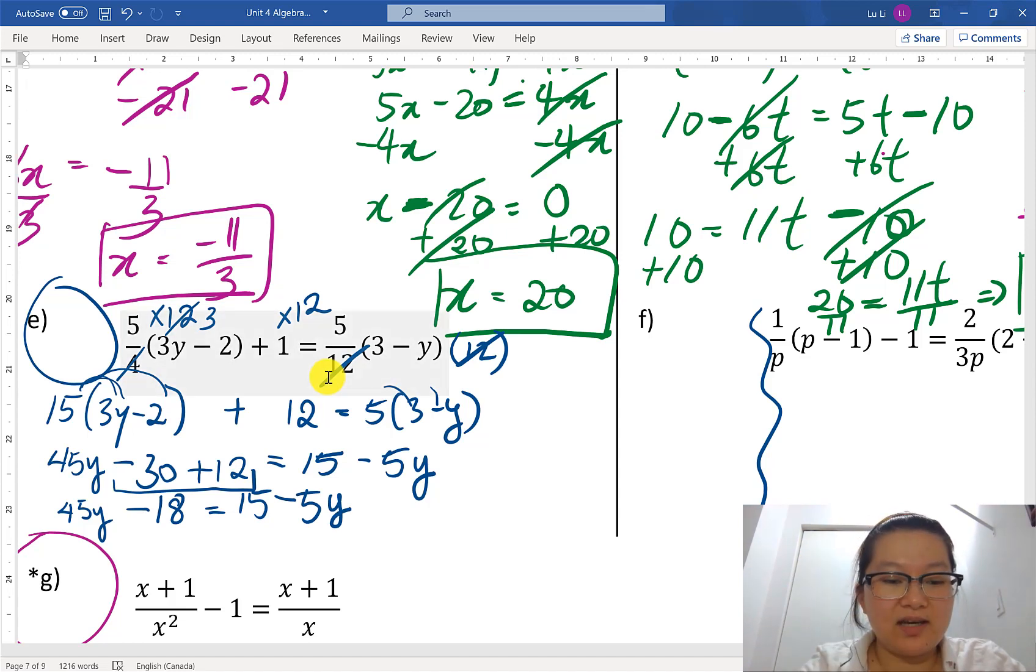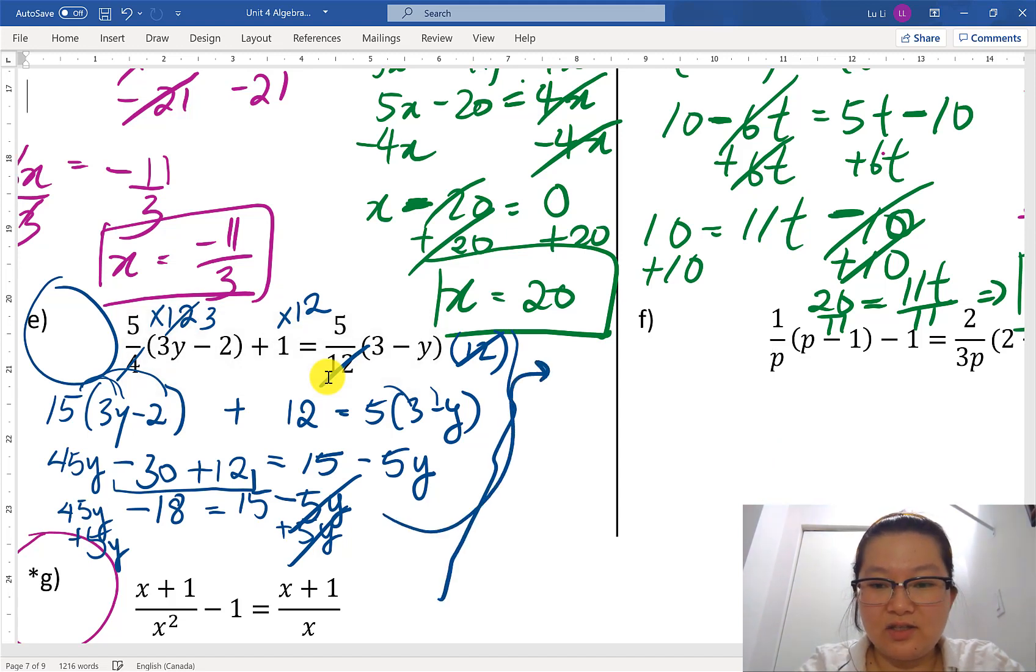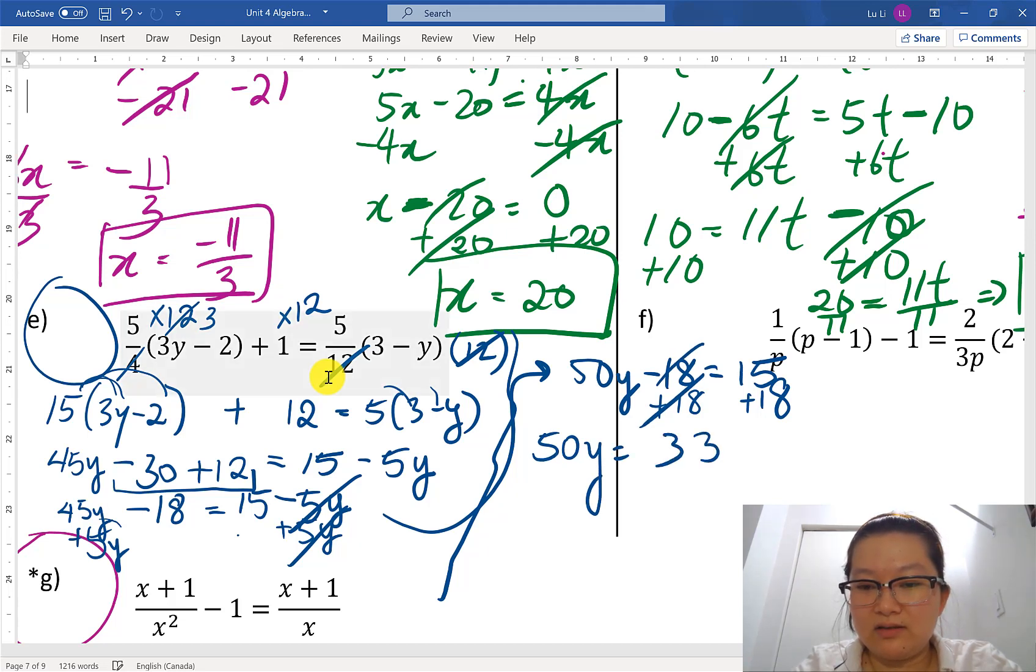Now let's get the like terms together. I'm gonna put the 5y to the other side by adding 5y here and adding 5y to the other side. It's getting a little busy though. So this goes away and let's do this squiggle line here. Let's continue on this side. So 45y plus 5y down here gives me 50y. 50 reasons why. I'm just kidding. Minus 18 and then the other side I have 15 left. Now peeling the onion or combining the constants together. I'm gonna add 18 here. Add 18 here. I get 50y is equal to 33.